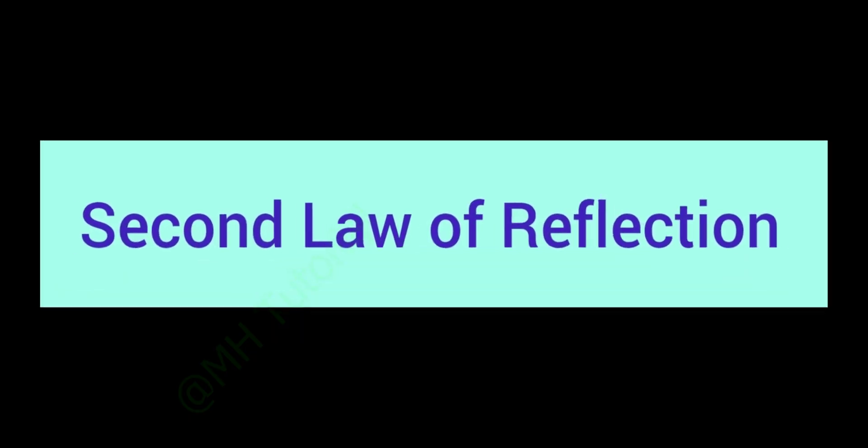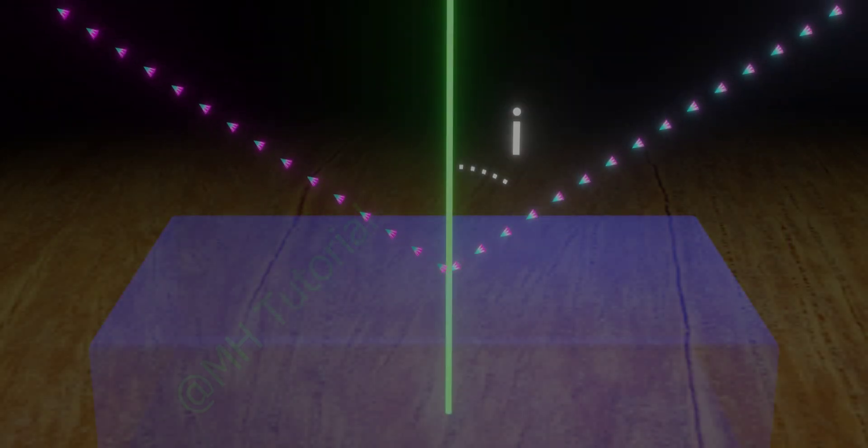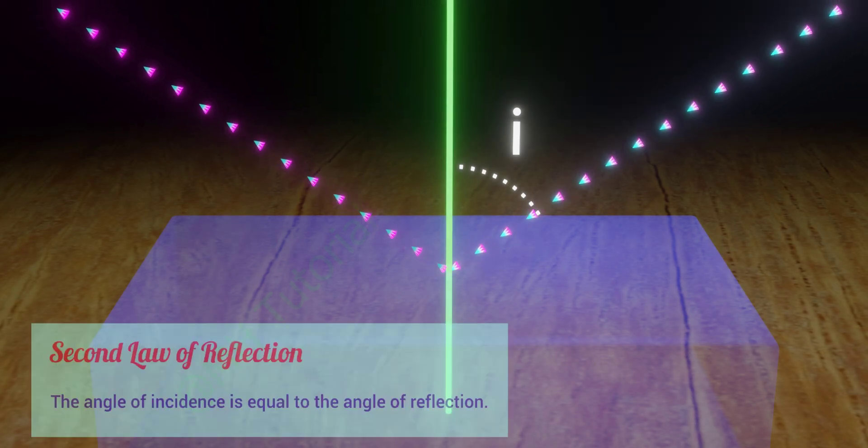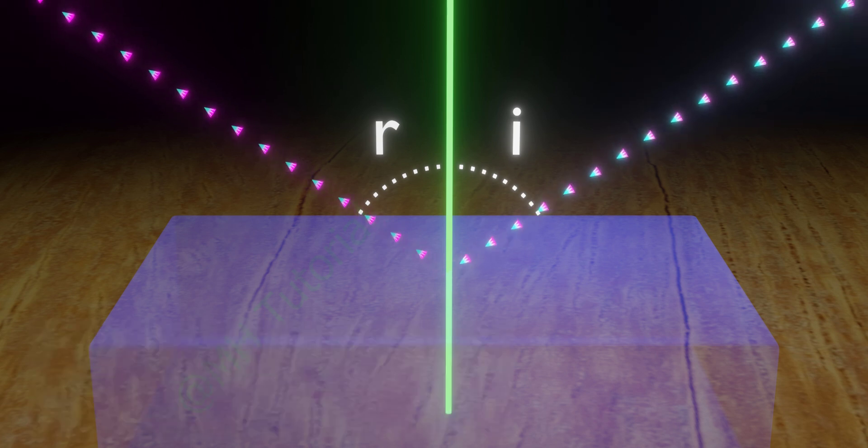Second law of reflection. It is very easy to understand. It says the angle of incidence is equal to the angle of reflection. These are the two laws that reflection of light maintains.